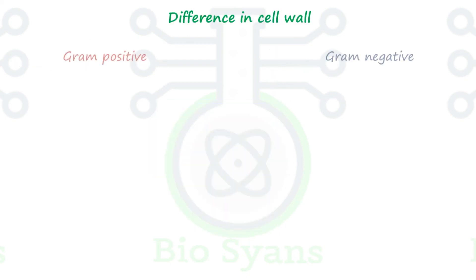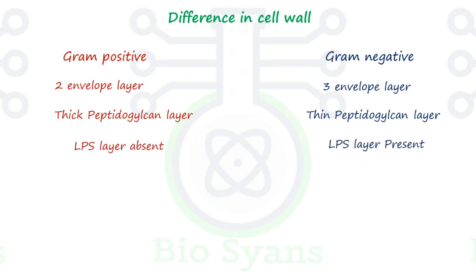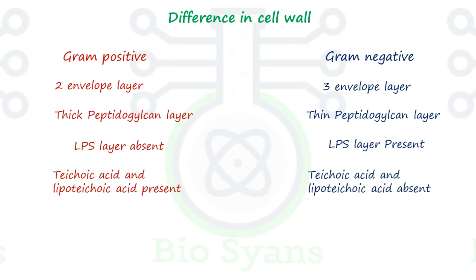Let's see the differences between gram-positive and gram-negative bacteria. Gram-positive bacteria have two envelope layers: the cytoplasmic membrane and the peptidoglycan layer. Gram-negative bacteria have three envelope layers: cytoplasmic membrane, peptidoglycan layer, and an outer membrane. Gram-positive have a thick peptidoglycan layer; gram-negative have a thin one. The lipopolysaccharide layer is absent in gram-positive and present in gram-negative. Teichoic acid and lipoteichoic acid are present in gram-positive bacteria but absent in gram-negative bacteria.